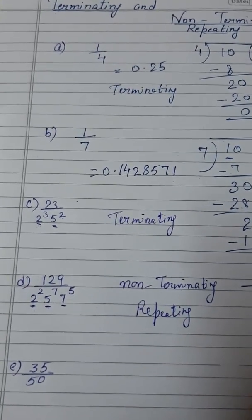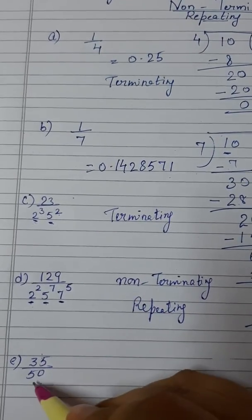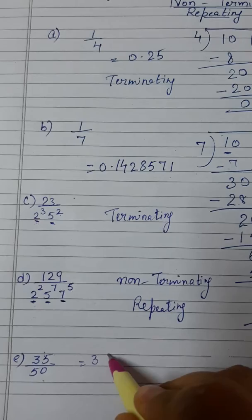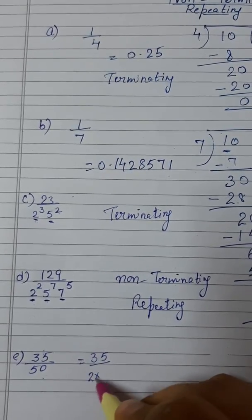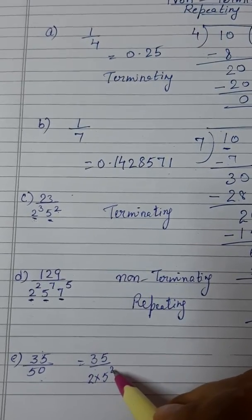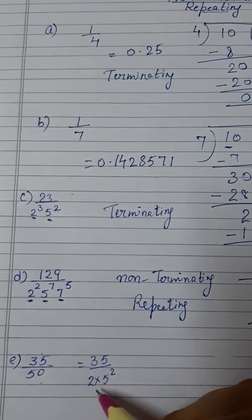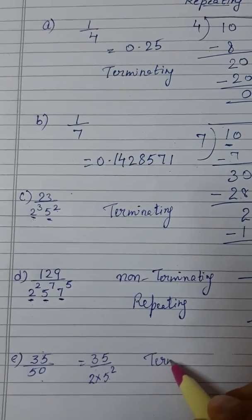Next we will take 35 by 50. 35 by 50, see the denominator. We can check it, 35 by 50. 50 we can write it like 2 into 5 square, 2 raised to power 1 and 5 raised to power 2. So it is having the powers of 2 and 5 only. So it will be terminating.